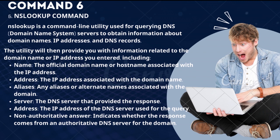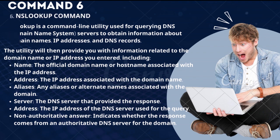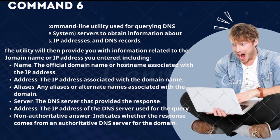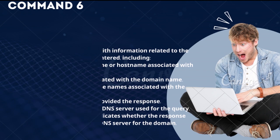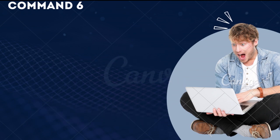Additional Nslookup output includes: Aliases — any aliases or alternate names associated with the domain; Server — the DNS server that provided the response; Address — the IP address of the DNS server used for the query; and Non-authoritative answer — indicates whether the response comes from an authoritative DNS server for the domain.